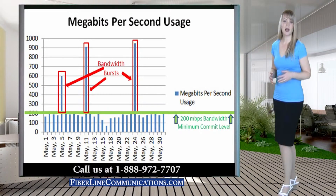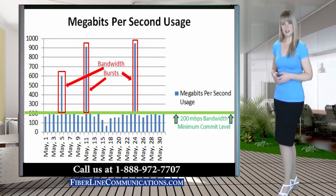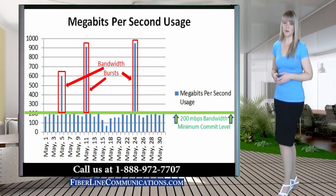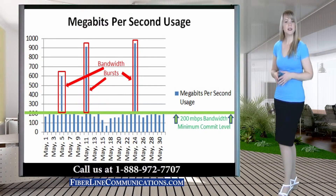Ethernet is more commonly available as burstable bandwidth than DS3. Colocation facilities often have greater access to burstable bandwidth due to their close proximity to fiber. Customers that utilize colocation facilities are often better able to obtain burstable bandwidth than customers that terminate bandwidth at their business location.